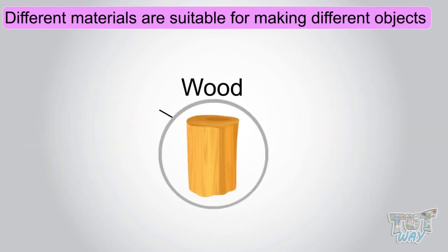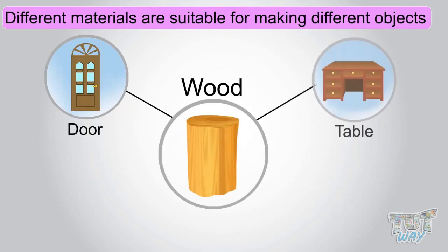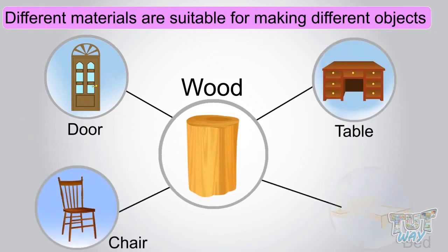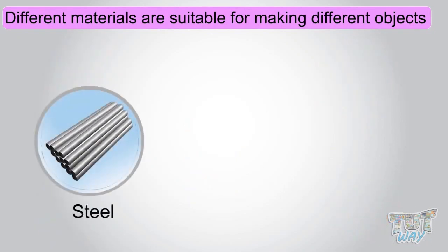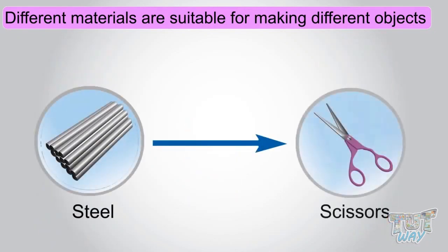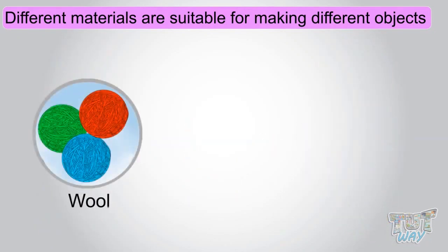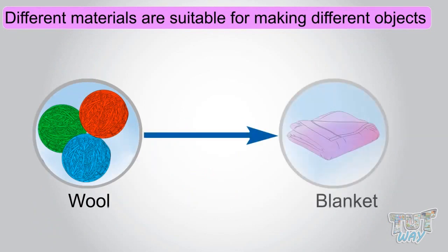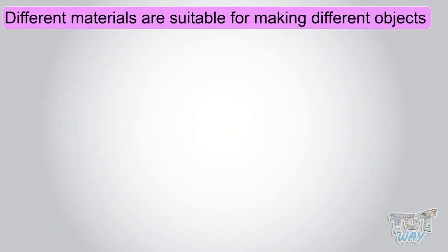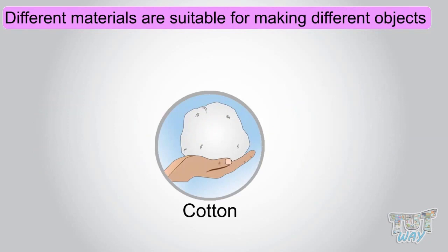Wood is suitable for making doors, table, chair, and other furniture. Steel is suitable for making scissors. Wool is suitable for making blankets. Cotton is suitable for making clothes and bed sheets.